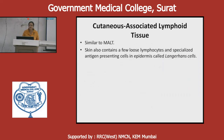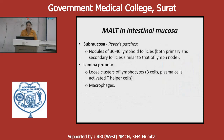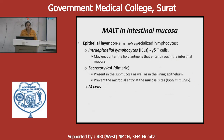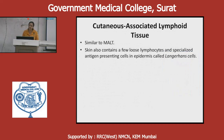Together, these constitute the MALT in the intestinal mucosa: Peyer's patches in submucosa, loose clusters of lymphocytes and macrophages in lamina propria, and intraepithelial lymphocytes, gamma delta T cells, secretory IgA, and M cells in the epithelial layer. Cutaneous associated lymphoid tissue is similar to MALT but present over the skin. The skin contains a few loose lymphocytes and specialized antigen presenting cells in the epidermis called Langerhans cells.